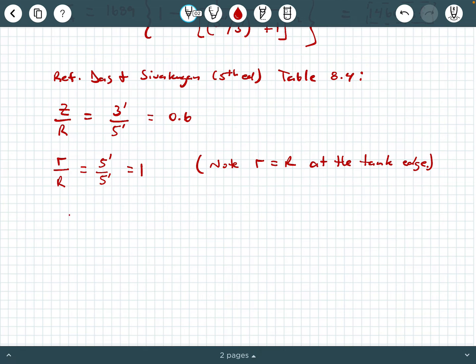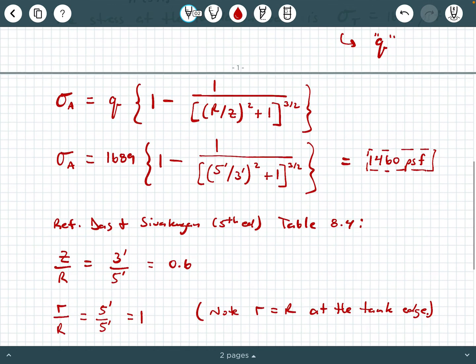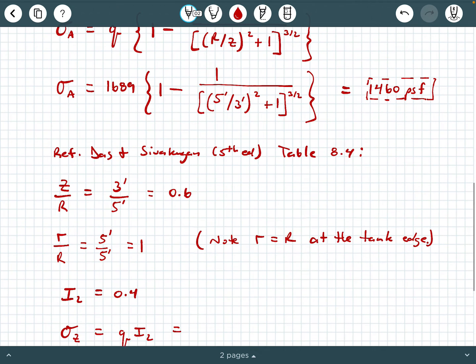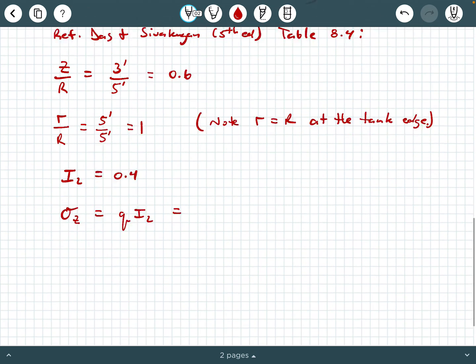So we enter into that and we pull out this influence value, which Das and Sivakugan label as I_2, and that's 0.4 from their table. Then we can calculate σ_z as q times I_2, and of course our q value was 1689 PSF, always put those units.